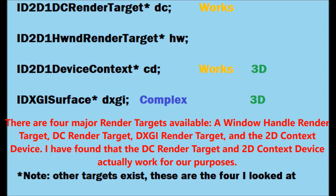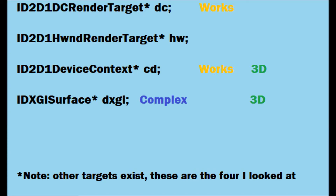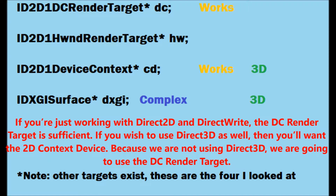I have found that the DC render target and 2D context device actually work for our purposes. If you're just working with Direct2D and DirectWrite, the DC render target is sufficient. If you wish to use Direct3D as well, then you'll want the 2D context device. Because we're not using Direct3D, we are going to use the DC render target.